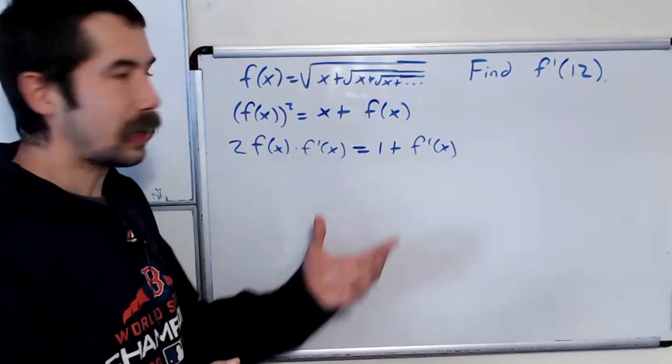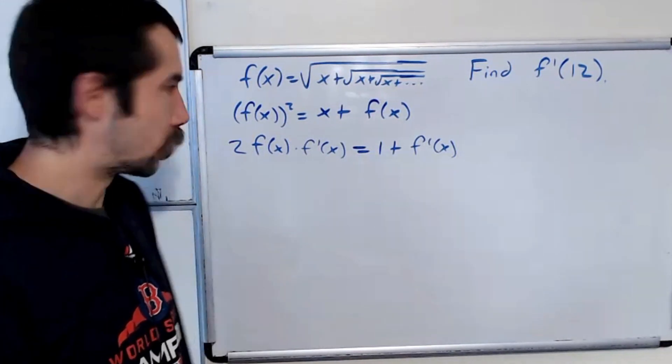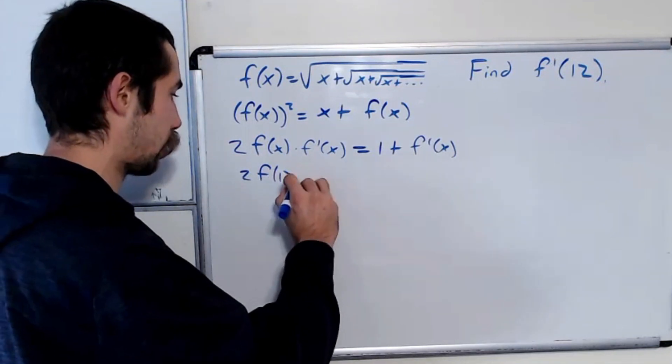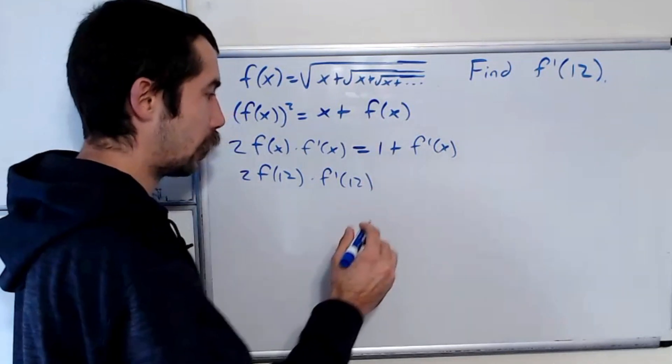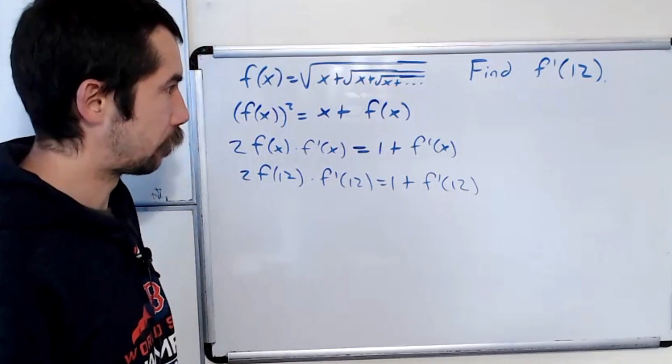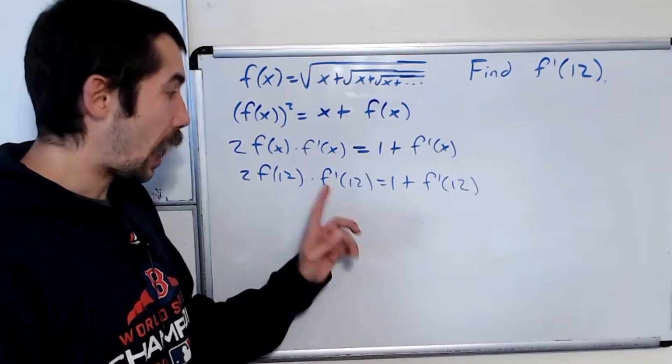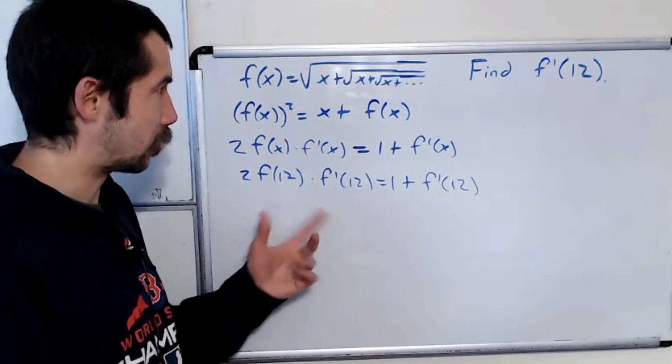Okay, and so let's sub in x equals 12 and see what else we have to figure out before we can solve the problem. So subbing in x equals 12, we have 2 f of 12 times f prime of 12, which is what we're looking for, is equal to 1 plus f prime of 12. Okay, so how are we going to get f prime, sorry, how are we going to get f of 12? That's the only thing we need to find before we can solve the problem.